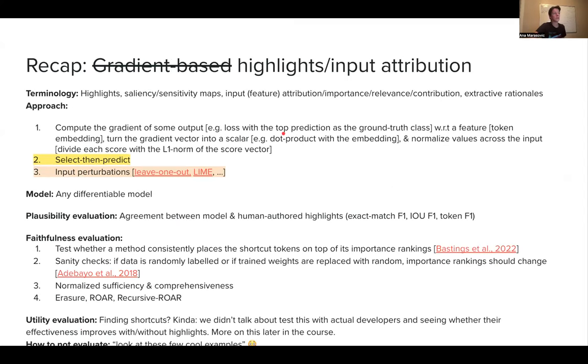All right. So this is kind of recap of highlighting an input distribution here. I crossed out gradient base because I have introduced select and predict, which is not gradient based. And so in the approach here, I have added you a few more. So first I said, we can use gradient to find important tokens in a post hoc manner. Now we have learned about select and predict, but have in mind that these two are not only gradient, excuse me, only input attribution methods out there. There are way, way more such as leave one out and LIME that you will see in a lot of papers. So yeah, we can't go over every single method in this class. Just know that more exists and then everything else stays the same even for select them predict highlights.